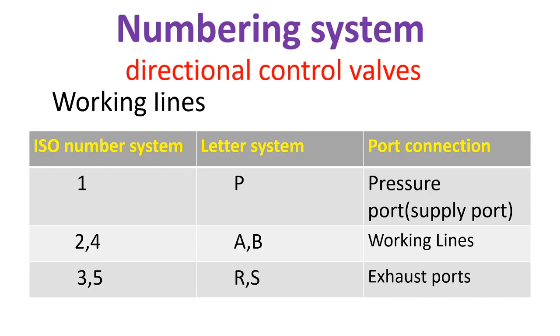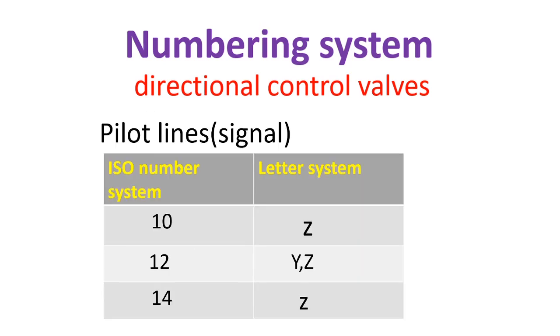For number two and four or A or B, that is working lines. For number three and five or R and S, that is exhaust ports. And for pilot lines or signal, 10 is equivalent to Z, 12 is equivalent to Y or Z, 14 is equivalent to Z.